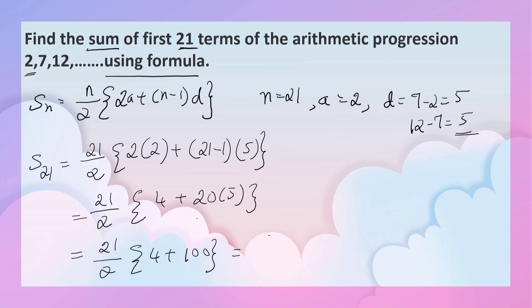That is equal to 21 by 2 into 104, that is equal to 21s are, 52s are, 52 into 21.